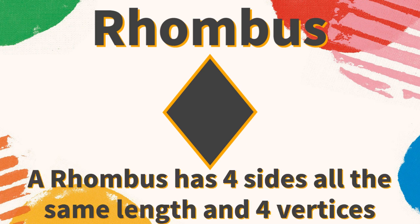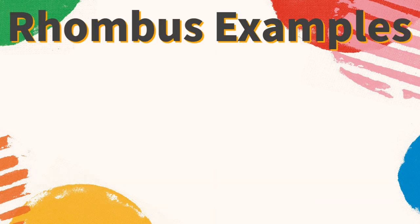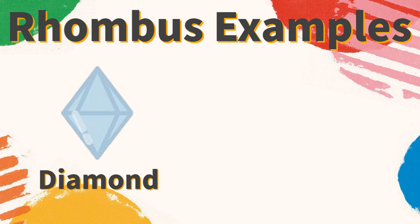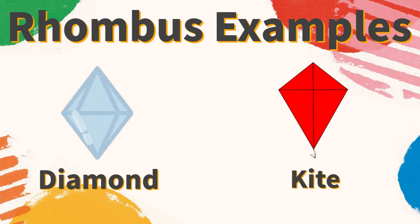Rhombus: a rhombus has four sides all the same length and four vertices. What are some examples of a rhombus? A diamond is a rhombus, a kite is a rhombus. What are some other examples of rhombuses?